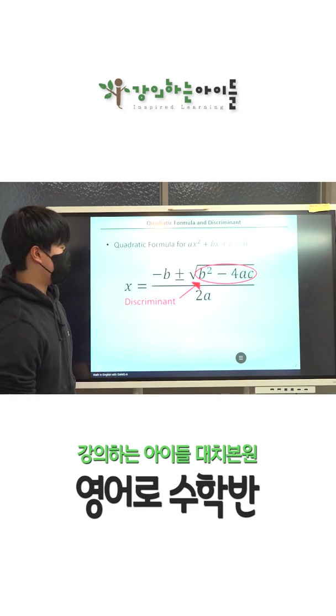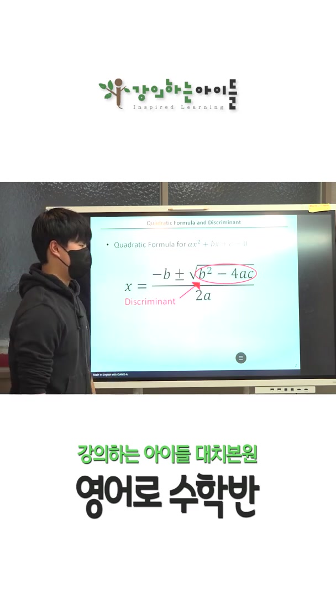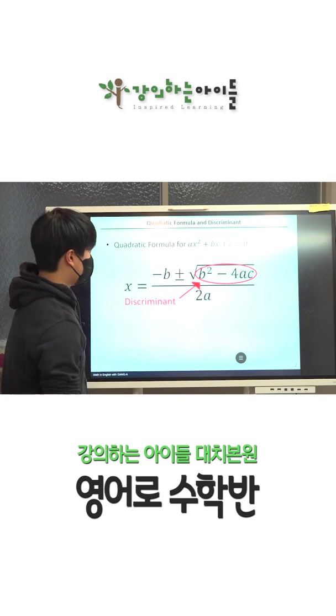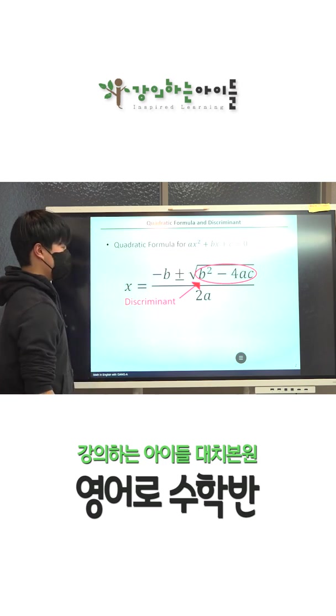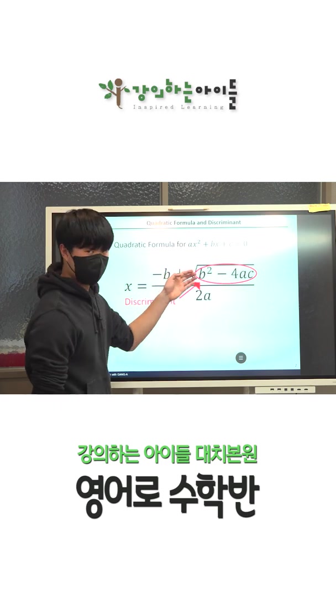It is very well known that the quadratic equations are obtained by the quadratic formula. As we can see here, the discriminant is the part of the quadratic formula under the square root.